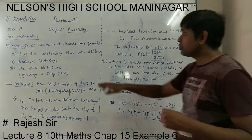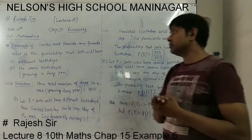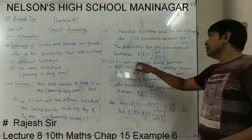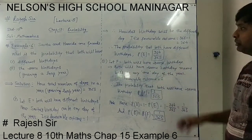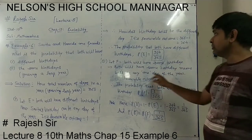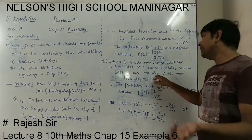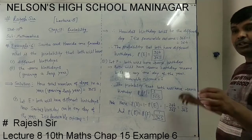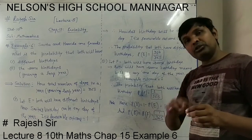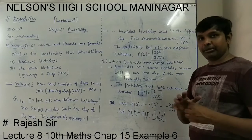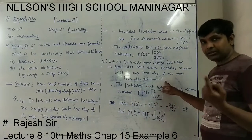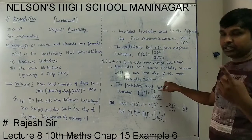Now the next question — the same birthdays. Let F denote that both will have the same birthday. Both will have the same birthday means any one day of the year from 365. So both girls will have their birthday on the same day, and its favorable outcome is only 1.